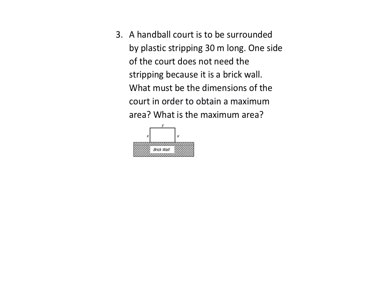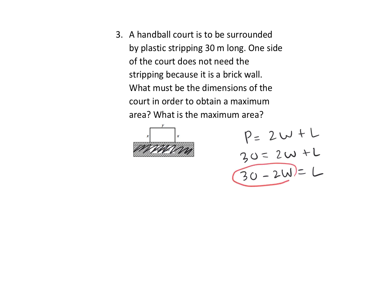Multiplying 40 by 20 gives 800 meters squared, which matches the number we got in the equation — that's the number we want to check. Now, one last one: we have a handball court to be surrounded by stripping that is 30 meters long. Again we have a wall, so we don't need fencing on that side. The perimeter is two widths and one length, giving 30 meters total. Isolating for L gives L equals 30 minus 2W, and area equals length times width.